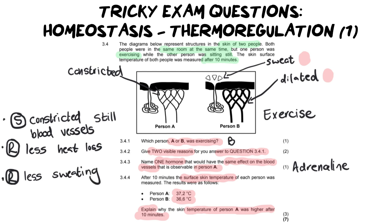Now it doesn't actually matter which order you put this in you could have put sweating first and then less heat loss. In actual fact it might make more sense to say there's less sweating therefore there is less heat loss but that is how you would explain why person A is warmer on their skin surface.